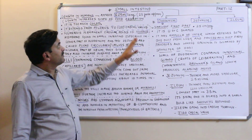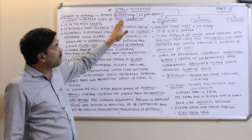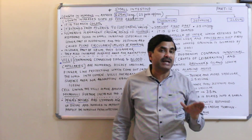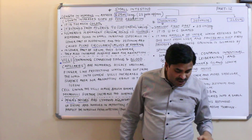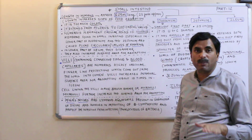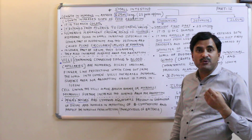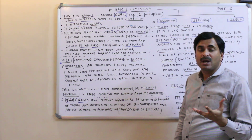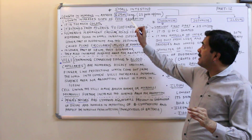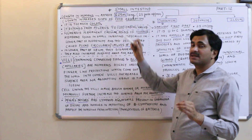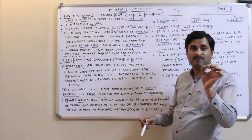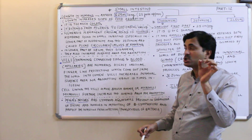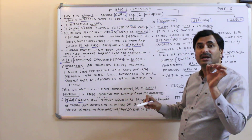Hello to all. Today we will be discussing the small intestine. It is the most important part of the alimentary canal because it is meant for digestion as well as absorption. There is a lot of confusion regarding the length of the small intestine. The actual length of the small intestine in human beings is six point two five meters.